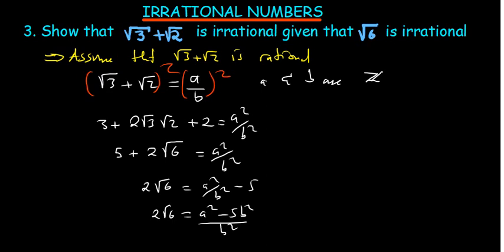Dividing both sides by 2, root 6 equals A squared minus 5B squared over 2B squared. Since A and B are integers, squaring an integer gives an integer, and multiplying integers gives integers. So A squared minus 5B squared is an integer, and 2B squared is an integer. An integer over an integer is always rational. But we know root 6 is irrational.